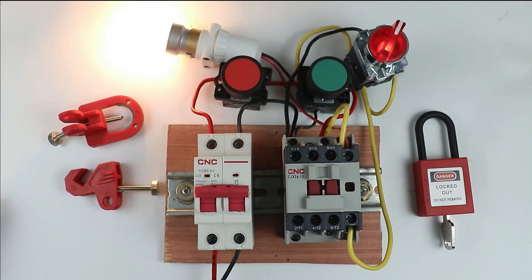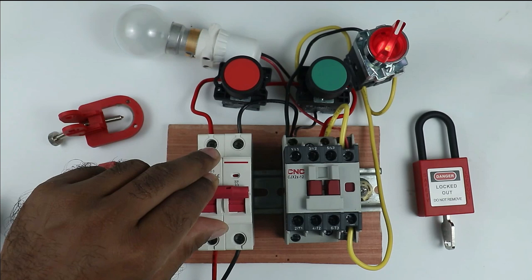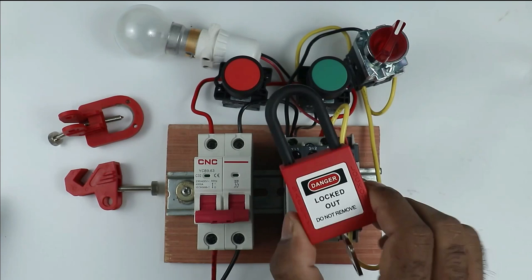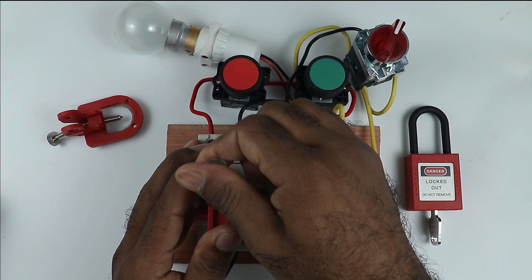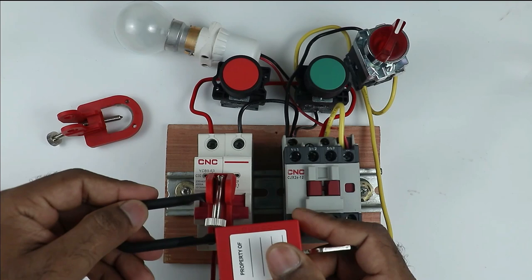So first turn off the starter, then turn off the main power supply. After turning off the main power supply, at this MCB, put this lock here. For putting lock, there is a system. Place this here, and in this way, tighten this system. Let's tighten this like this. After tightening, keep this at this side. Now take this lock and place this in this way. After putting the lock, I will keep the key with me.